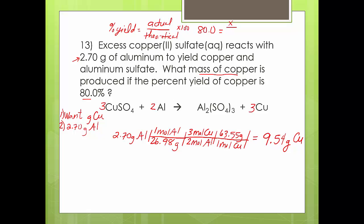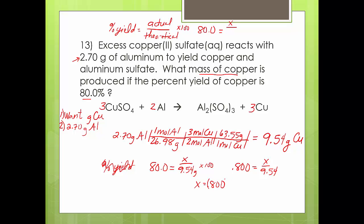So 9.54 grams is your theoretical yield. Take that theoretical and plug it back into the percent yield formula: 80% = actual over 9.54 times 100. Do the algebra — divide both sides by 100: 0.8 = x over 9.54. Cross-multiply: x = 0.8 times 9.54. In other words, you take 80% of your theoretical yield because you only have an 80% yield. You would expect to produce 7.63 grams of copper in the lab.